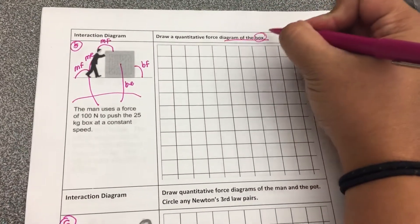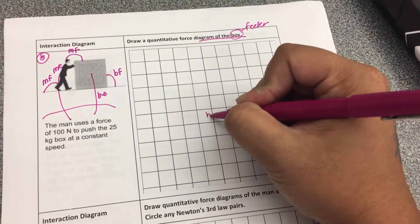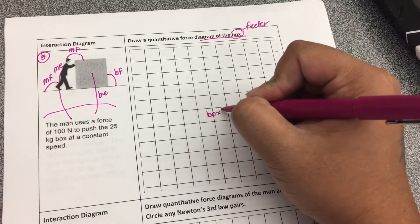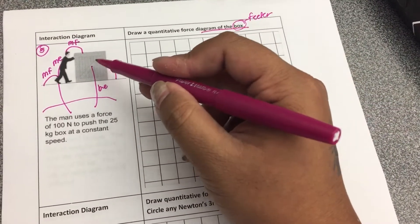Once again, this is the feeler. So it's going to be the center of our force diagram. And this is going to be the object that feels all the forces. What is acting on the box?